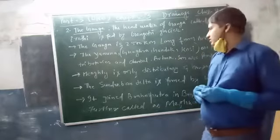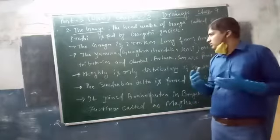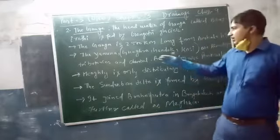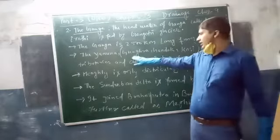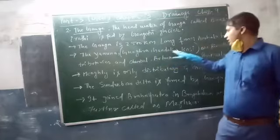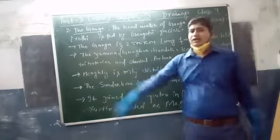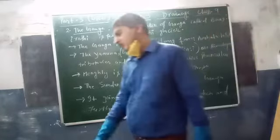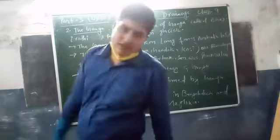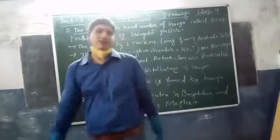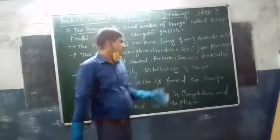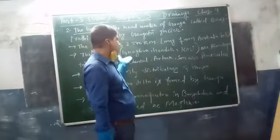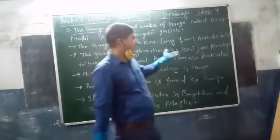There are three rivers — Ghaghra, Gandak, and Kosi. They are Nepal rivers — these rivers originate in Nepal.